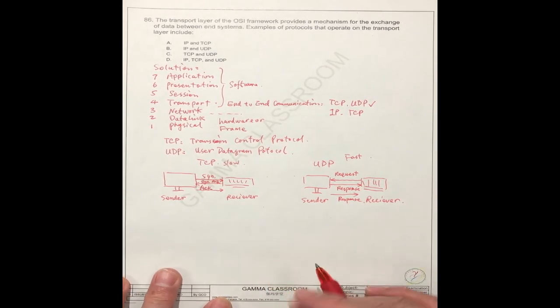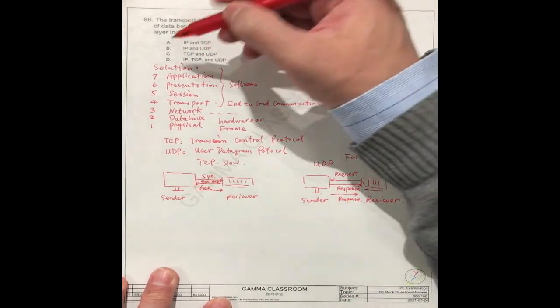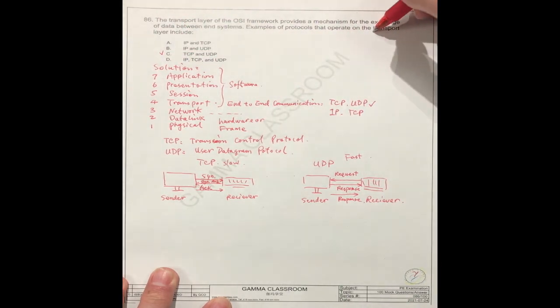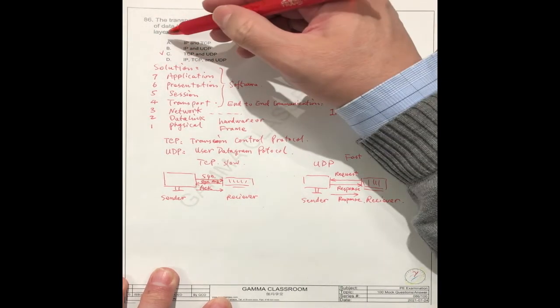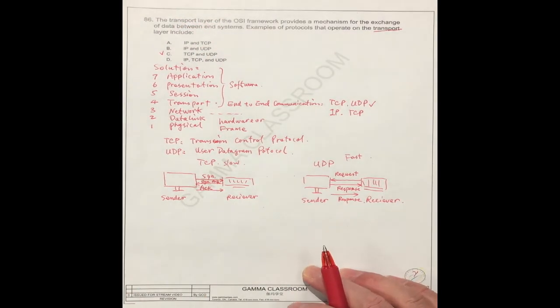So the correct answer you see here, A, B, C, D, it should be C. The transport layer includes TCP and UDP.